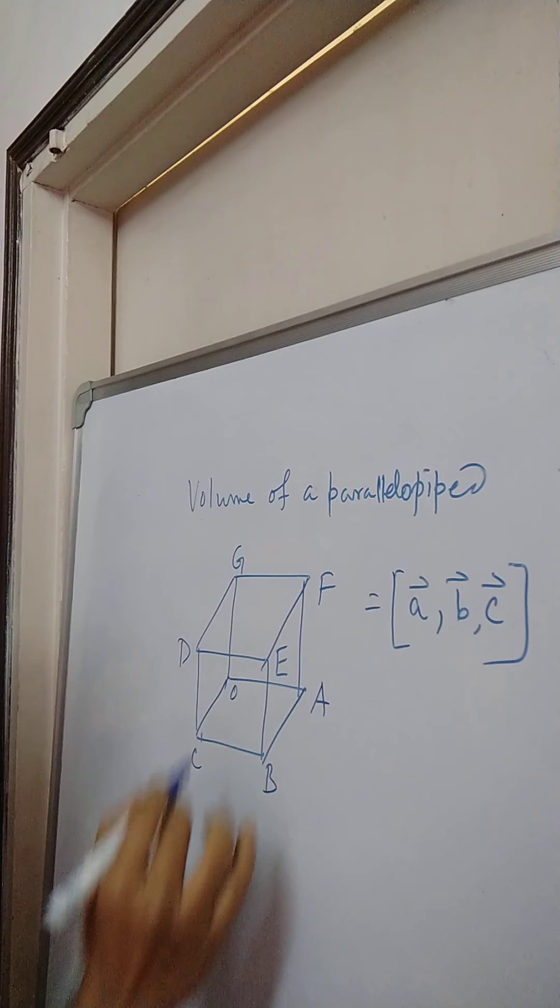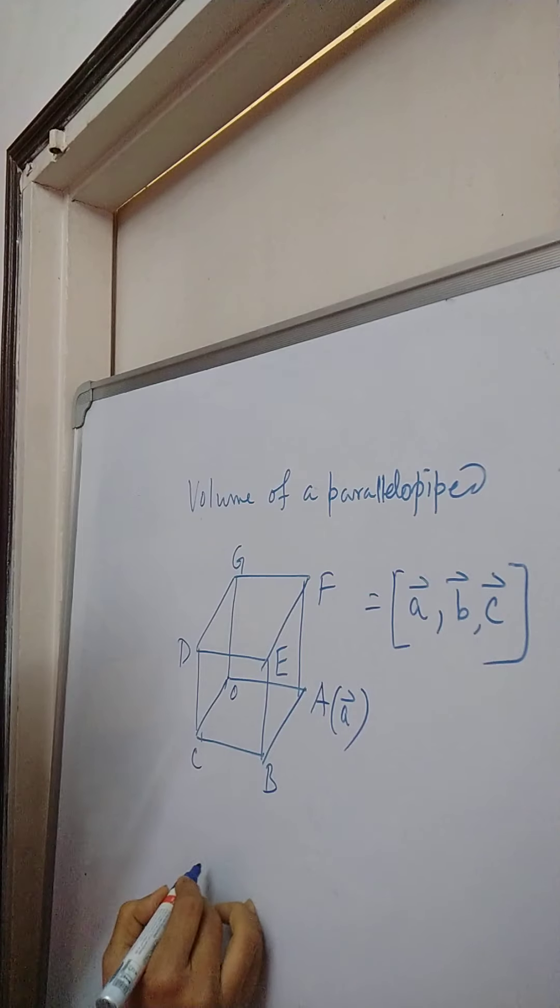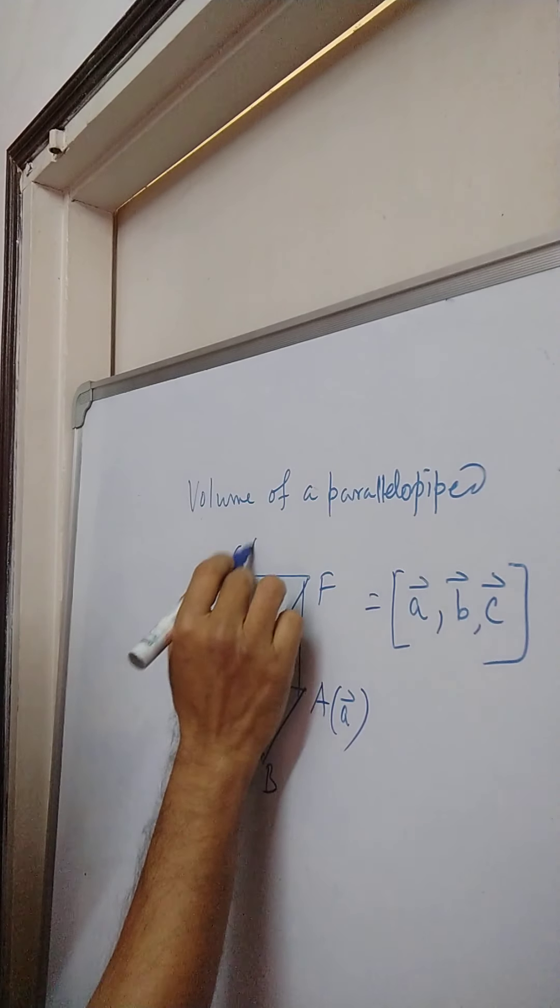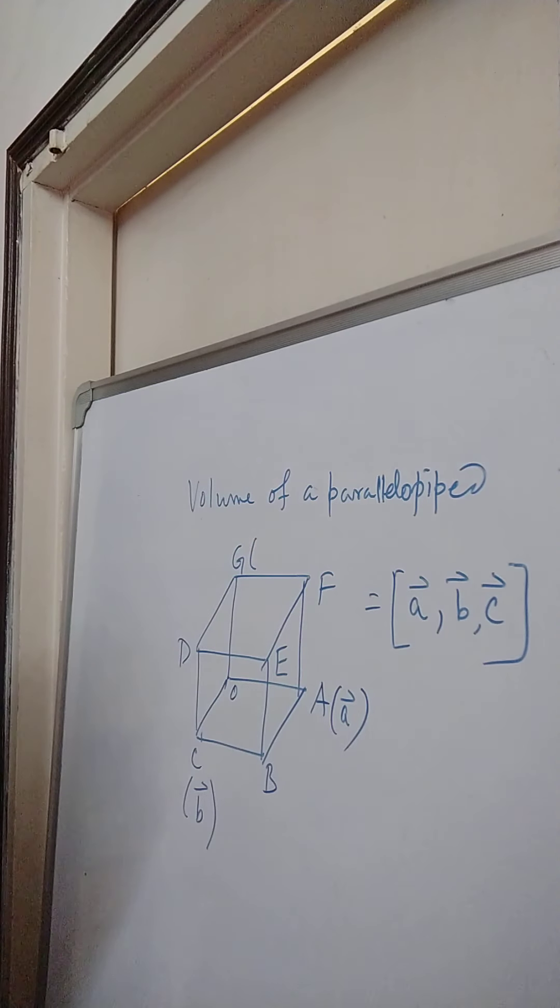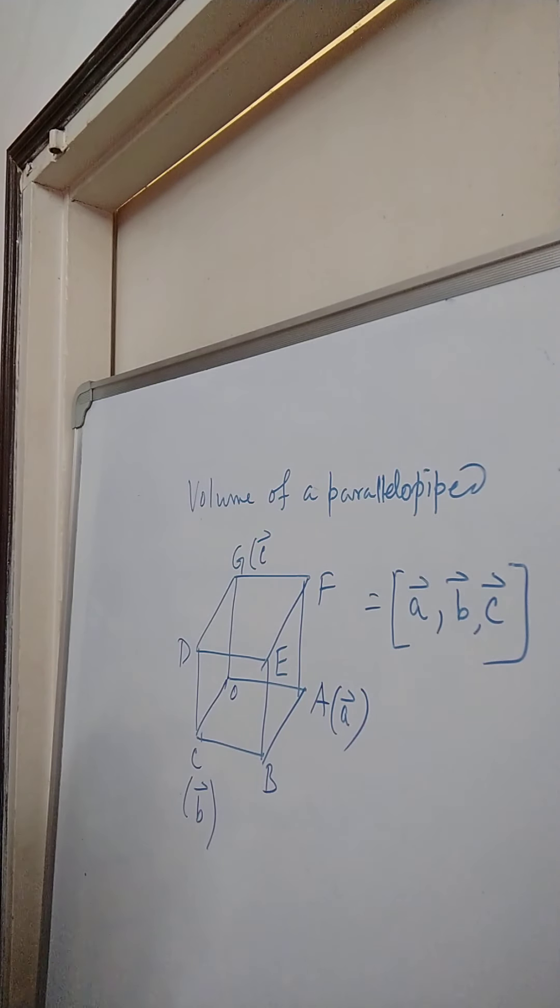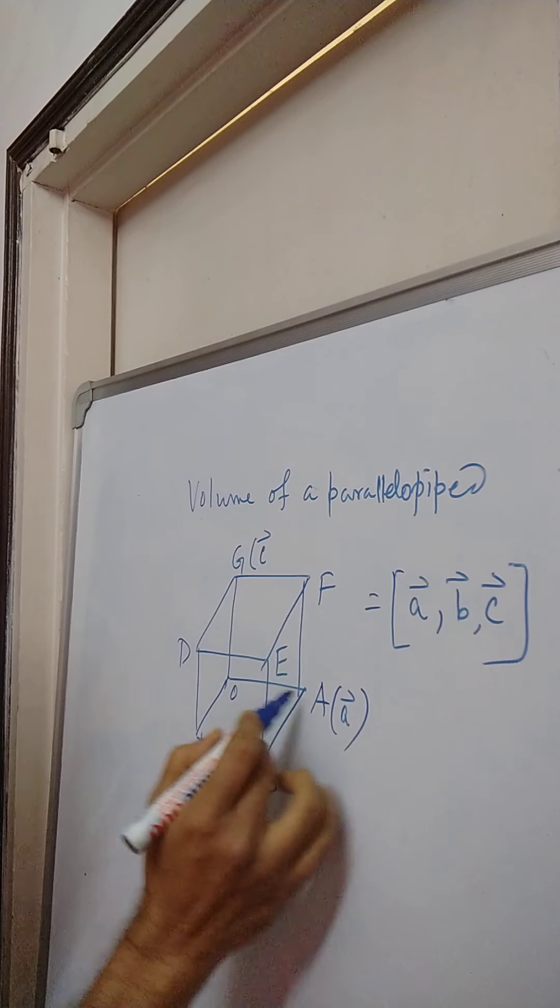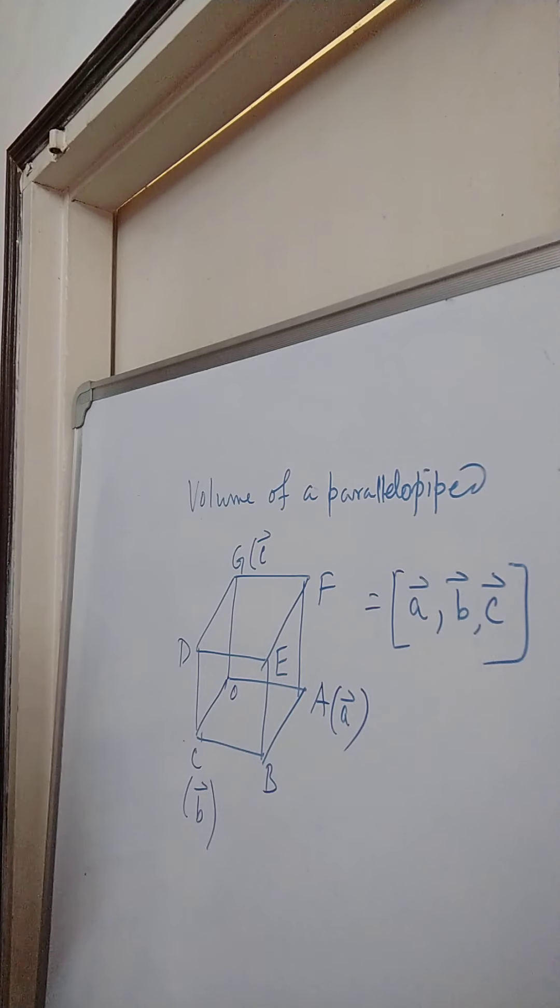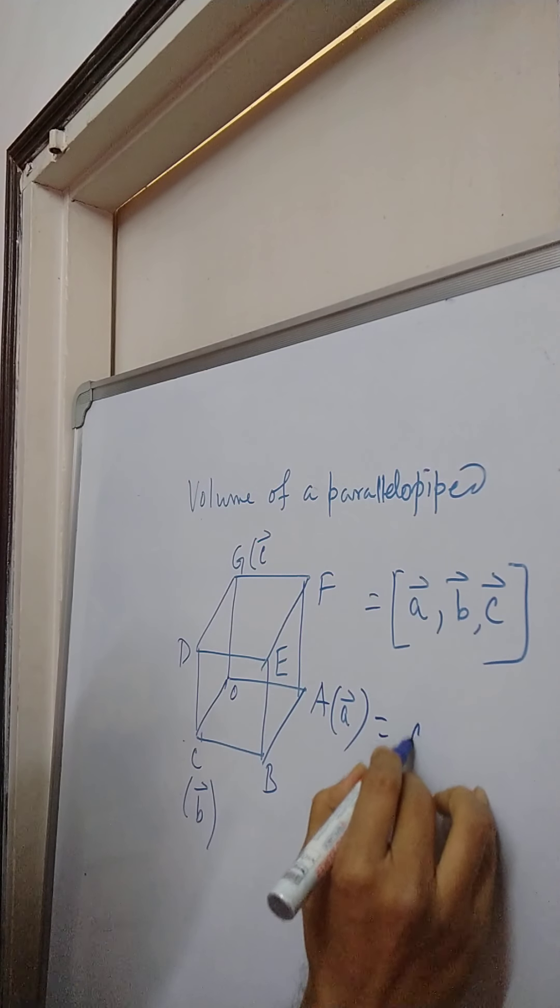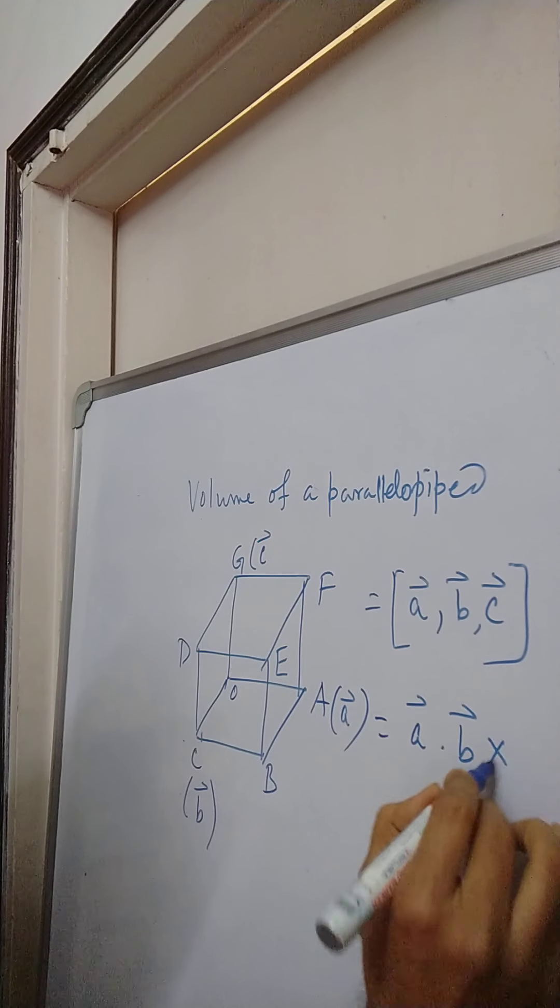If OA is the vector A, OC is the vector B, and OG is the vector C, this is A, this is B, and this is C. Just see that what is ABC? This is actually A dot B cross C.